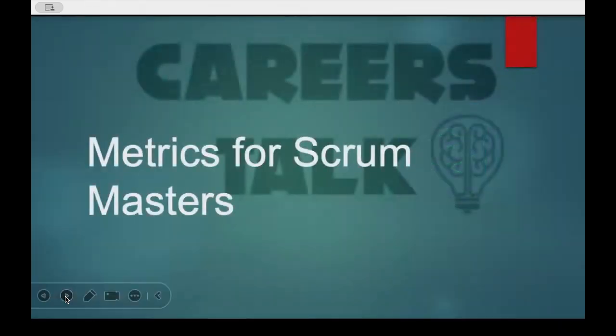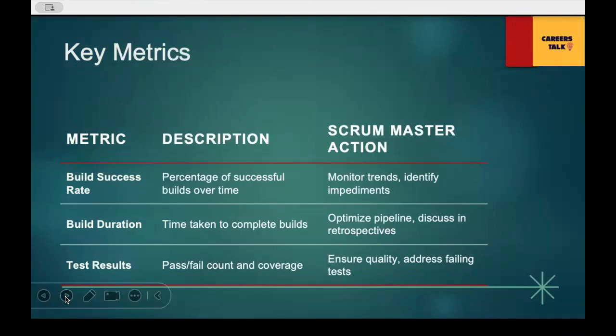As a Scrum Master, there are key metrics — cornerstones of the industry-standard DORA metrics — that you can observe from GitHub Actions. Build success rate: how stable is the code? Deployment frequency: how often are we releasing? MTTR — mean time to recover pipeline issues. Test coverage: are we covering most of the code? These metrics help you identify bottlenecks, quantify technical debt, and drive continuous improvement during retrospectives.